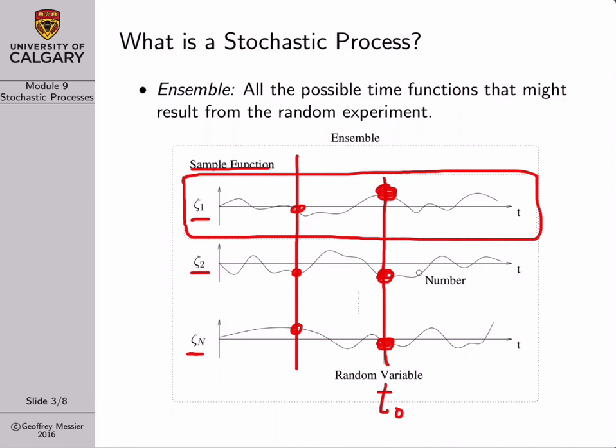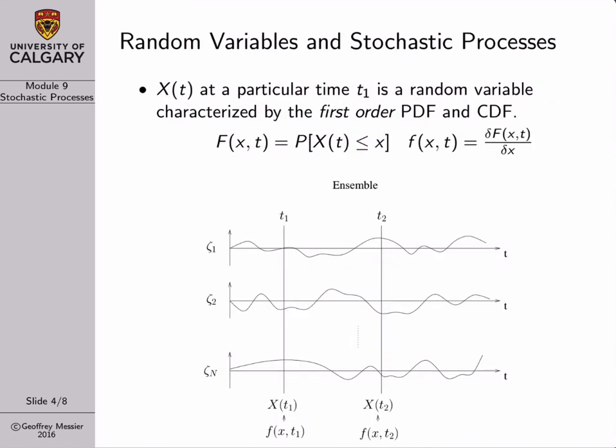It's important to understand that the random variable obtained from a vertical cut at time t0 might have different statistics than the vertical cut at time t1. If you fix the time in your stochastic process ensemble, you get a random variable. And of course, if you fix the time and also fix your experiment, then you're just left with a single number.